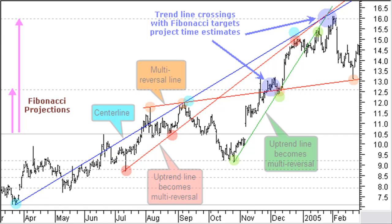Multi-reversal lines not only complement price targets, but in combination with Fibonacci price projections — which we will talk about later on — they can project time estimates as to when a price target can be reached. Note in the chart how the first and second Fibonacci targets are reached close to the time estimates given by several crossings with the special trend lines.